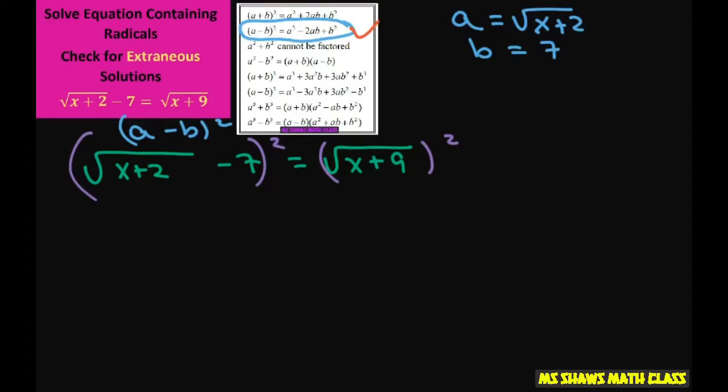So my a is a squared, so square this. Then put your minus 2 times a b. I'm going to put the 7 first and then your b, just makes it look a little better since you're multiplying. And then you put your plus 7 squared is 49 equals. Now when you square this you're just going to get x plus 9.